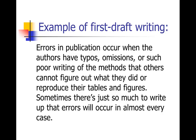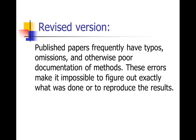I went back and revised it, and here's what I came up with. 'Published papers frequently have typos, omissions, and otherwise poor documentation of methods. These errors make it impossible to figure out exactly what was done or to reproduce the results.' You can see that very much resembles the first draft, except it's much more clear and concise and to the point. I dropped out a whole idea about there being too much to write up, because I had a quote from somebody who was saying that exact thing in another paragraph, so I didn't need the repetition.